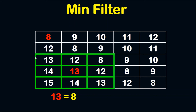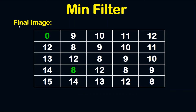Now the question is: what is the lowest value in the 3x3 mask? The answer is 8. So this pixel — which has value 13 — the new value of it will be equal to 8 like this.